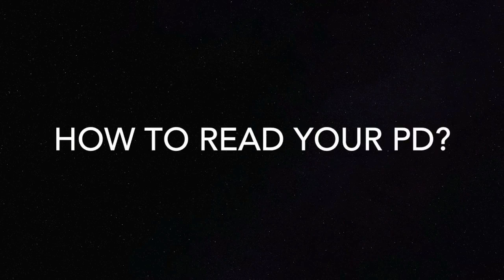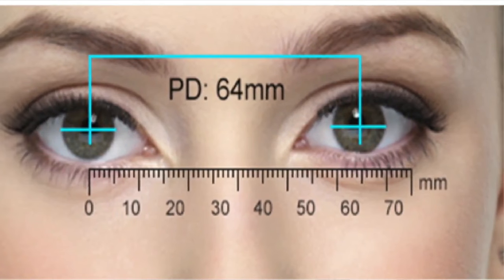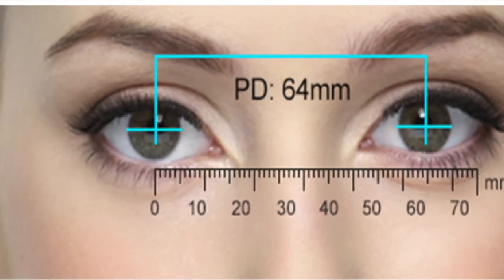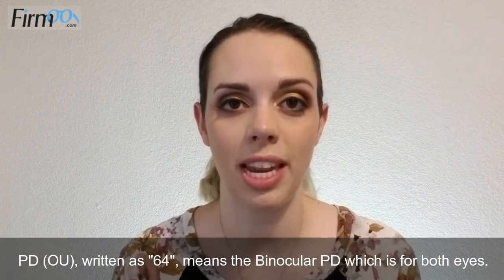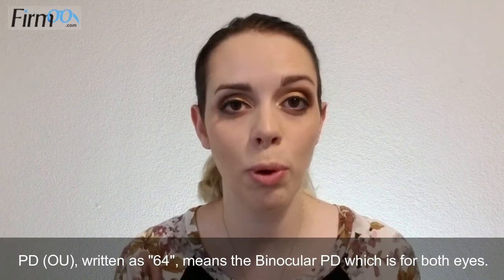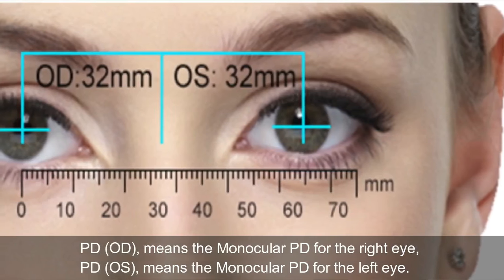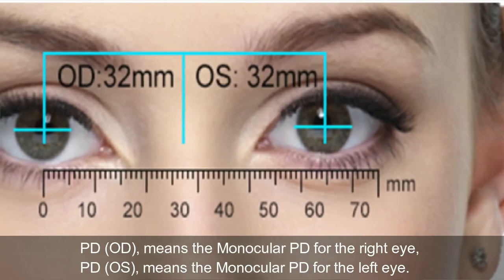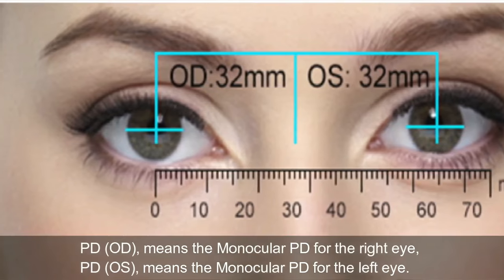How to read your PD. Your PD may be written in three ways. PD-OU, written as 64, means binocular PD, which is for both eyes. PD-OD means monocular PD for your right eye, and PD-OS means monocular PD for your left eye.